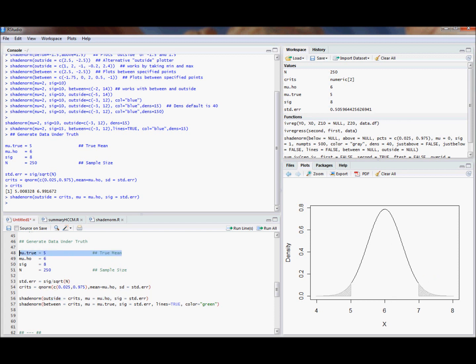Now suppose that the truth was that the mean was 5. That's going to be our alternative hypothesis. Under that true hypothesis, we could give my shade norm command that mean, keep the same standard error because we don't really know what else to do about the standard deviation of x bar. And then specify this lines equal true command to tell R that we want to write onto this plot so we can relate the null distribution to the alternative distribution.